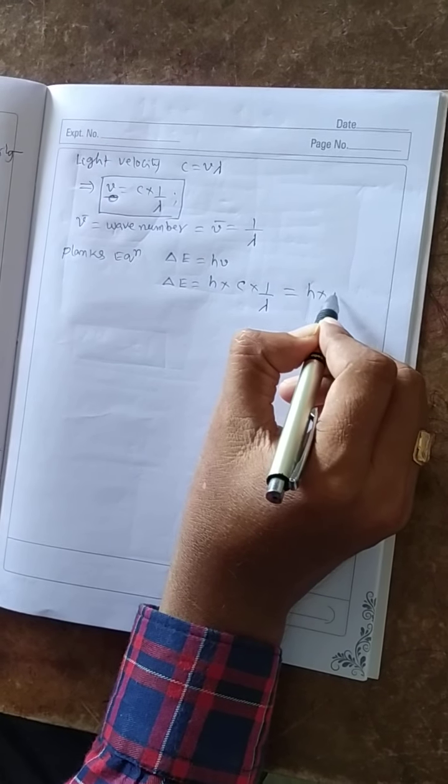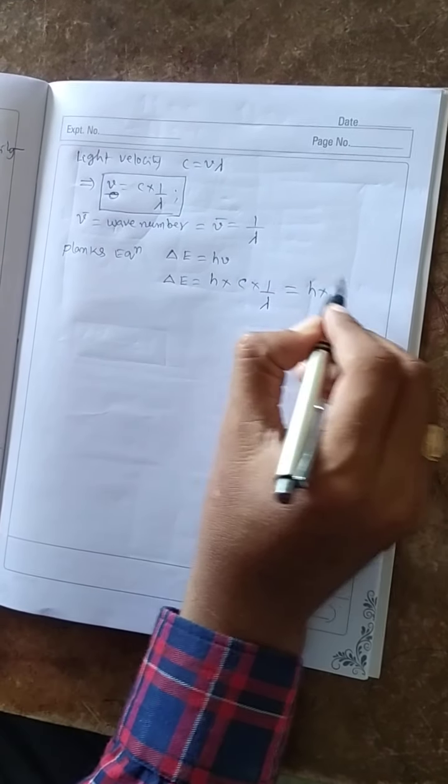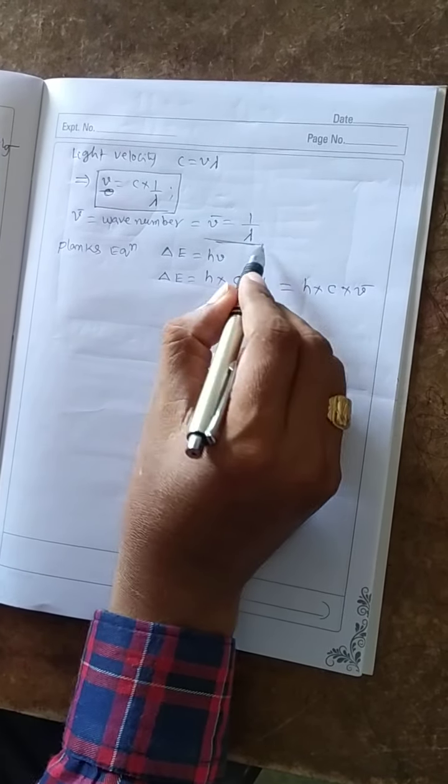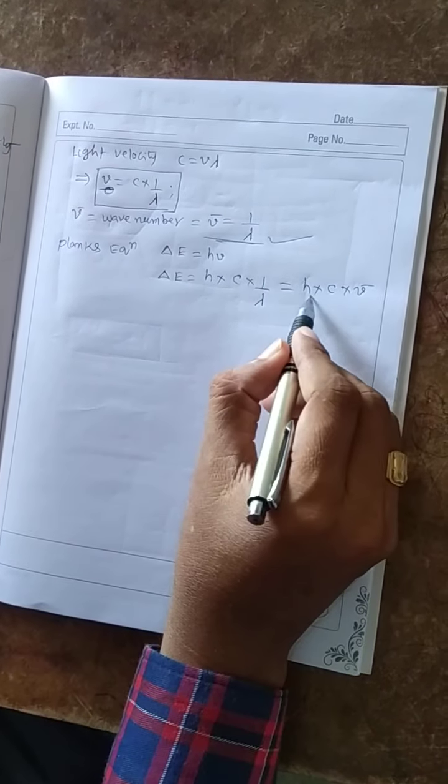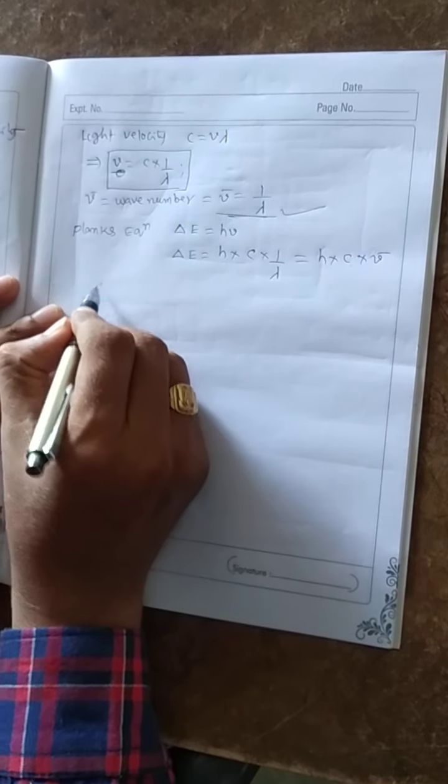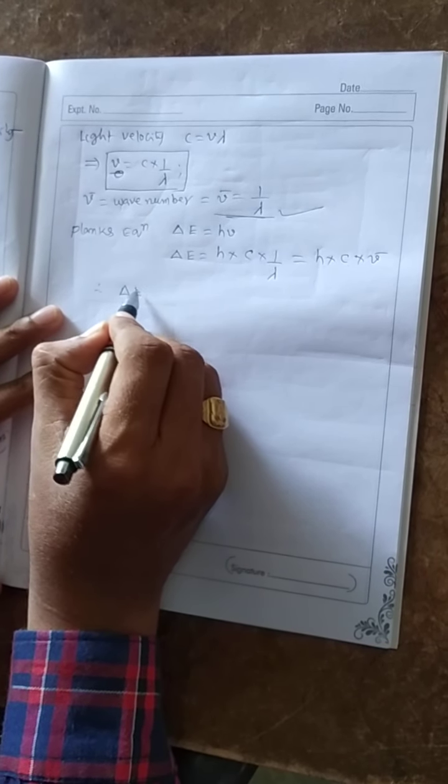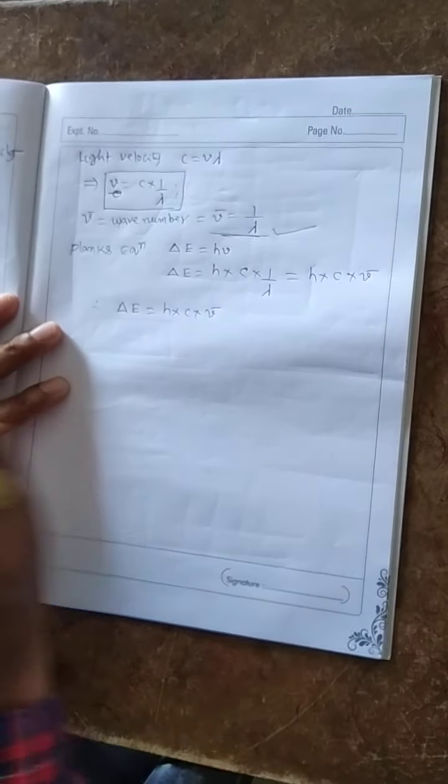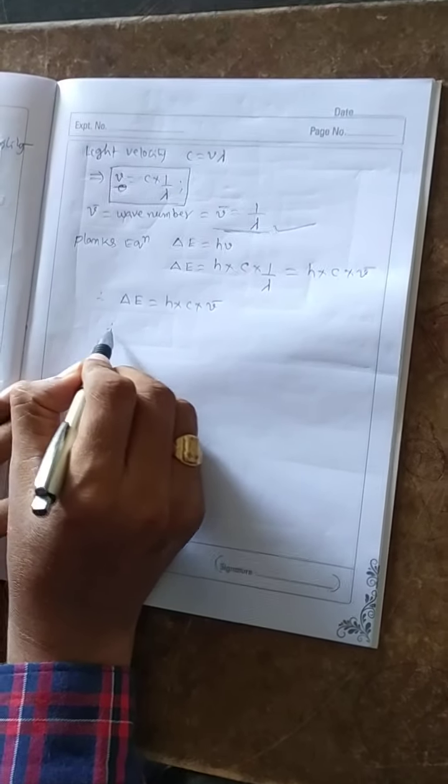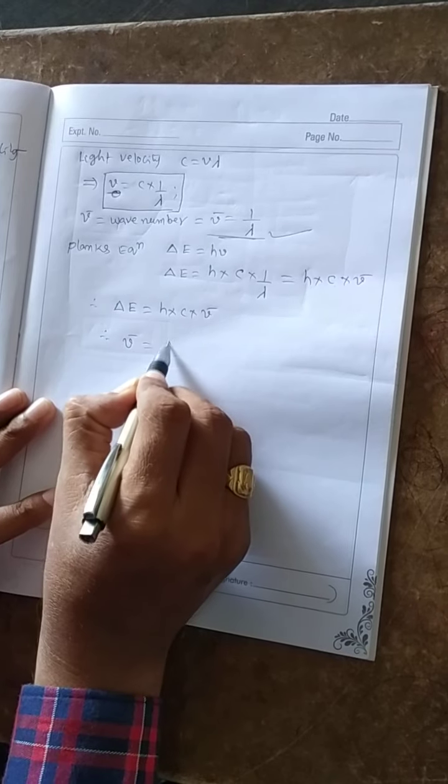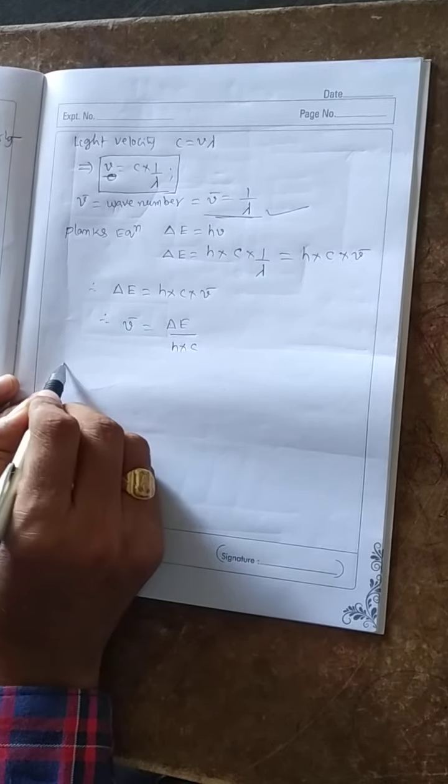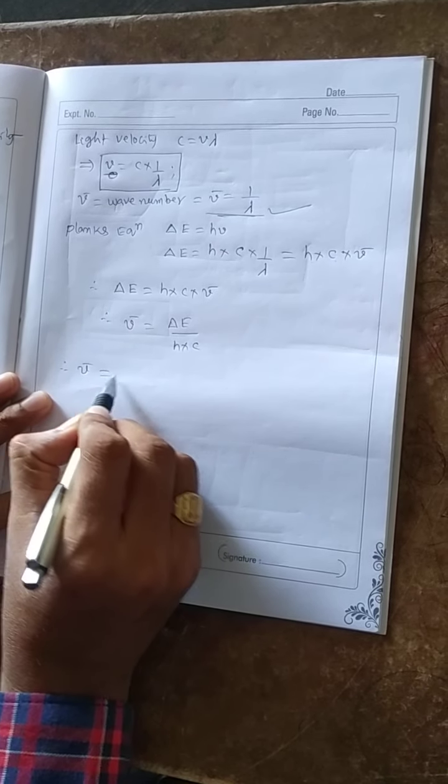h into c into 1 by lambda into n, so mu bar equals 1 by lambda into mu bar. Therefore h into c into mu bar, therefore delta E equals to h into c into mu bar. From this, mu bar equals to delta E by h into c.